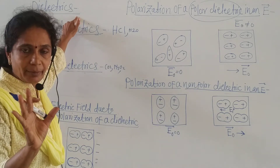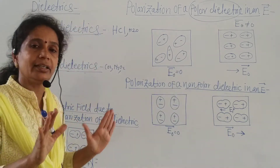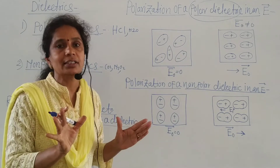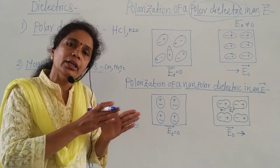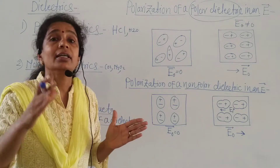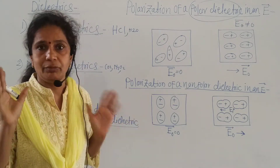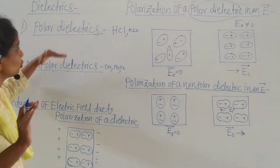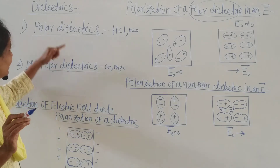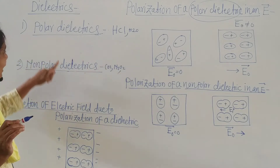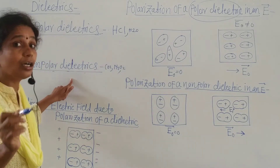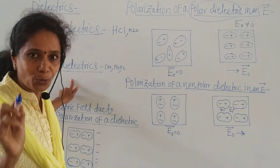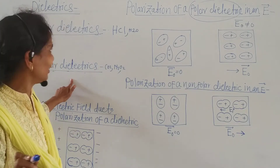So what is a dielectric? A dielectric is a non-conducting substance that only transmits the electric effect. There are two types of dielectrics: polar dielectrics and non-polar dielectrics.